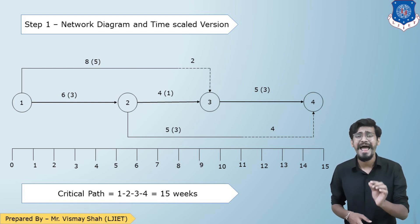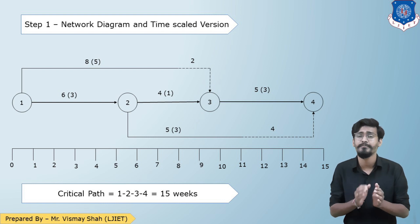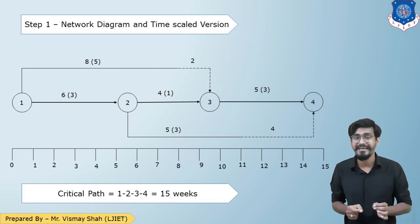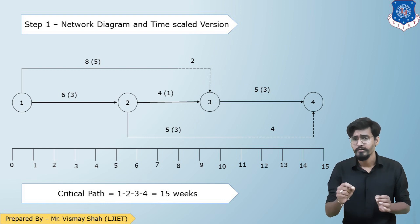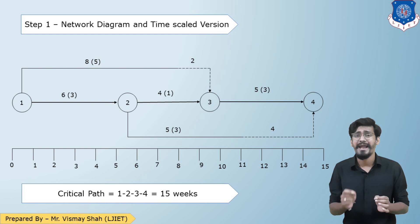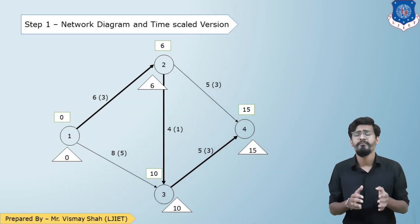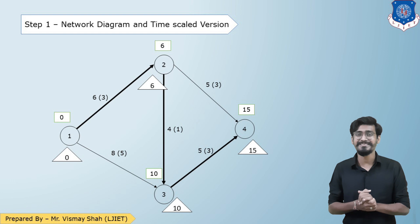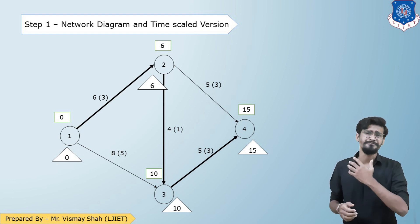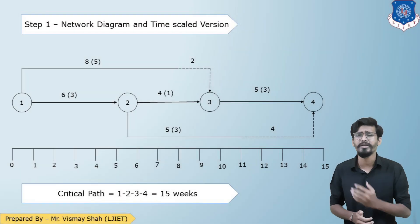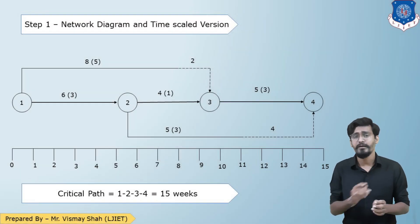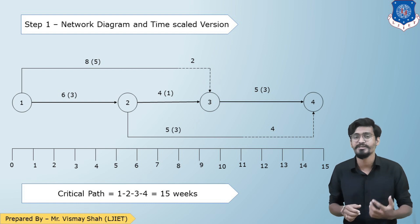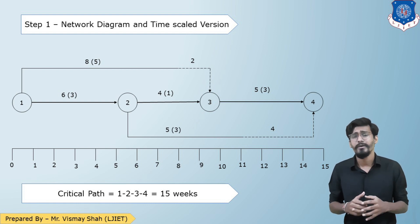In the time-scale diagram, activities 1-3 and 2-4 have a dotted or dashed line — that represents their float. For example, activity 1-3 has a direct duration of 8, but via the critical path 1-2-3 the duration is 10. So the remaining 2 is the float. A similar situation applies to activity 2-4.